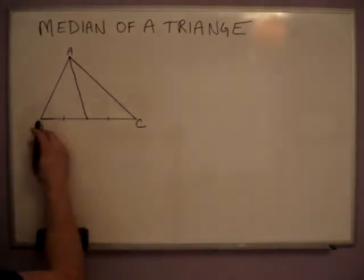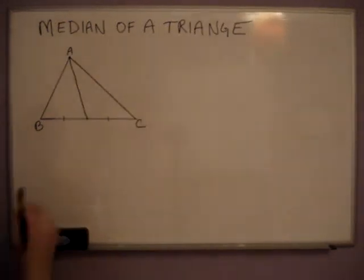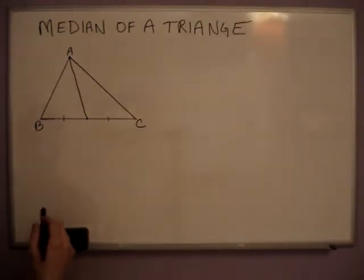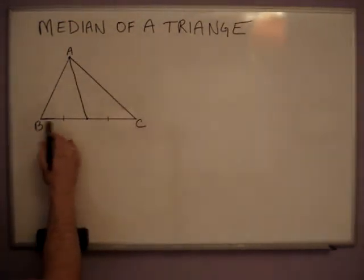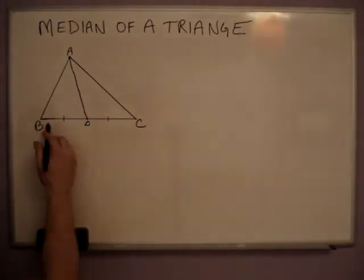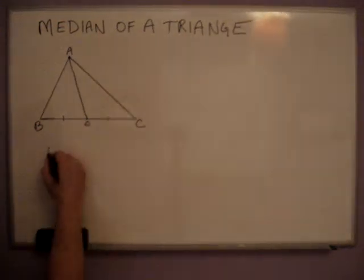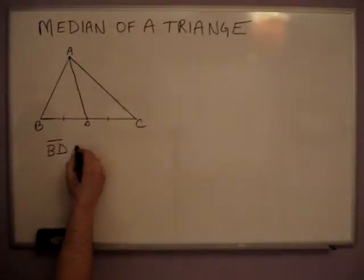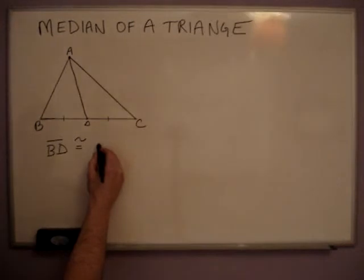So it bisects this line segment. Now each triangle has three. When I show you it says bisects, this line segment will label this D. BD is congruent to line segment DC.